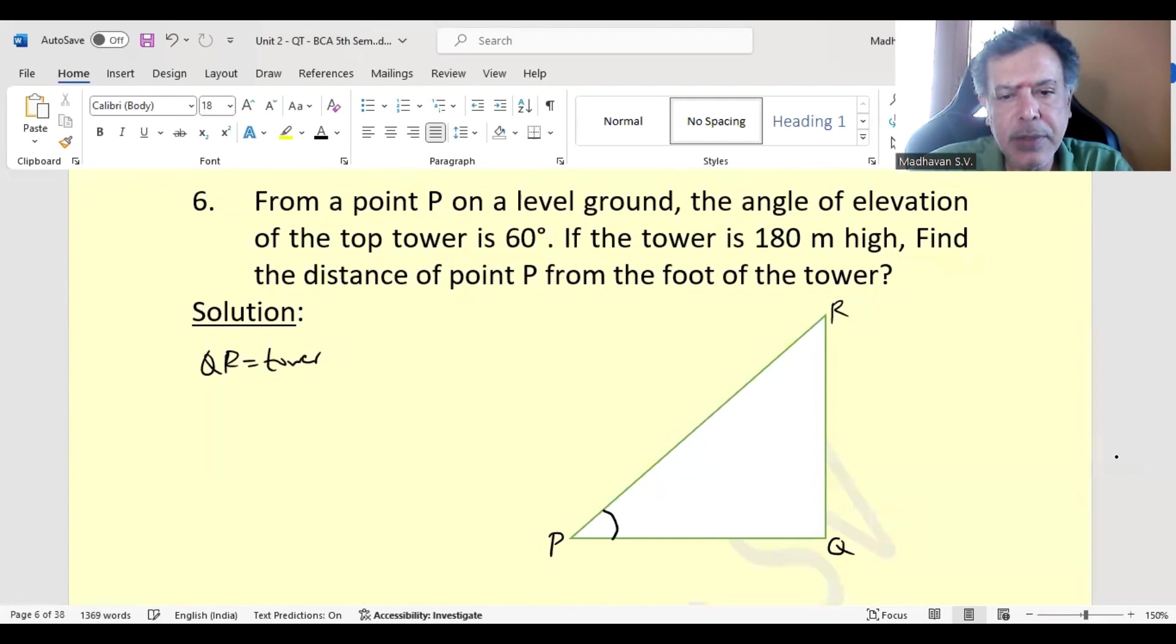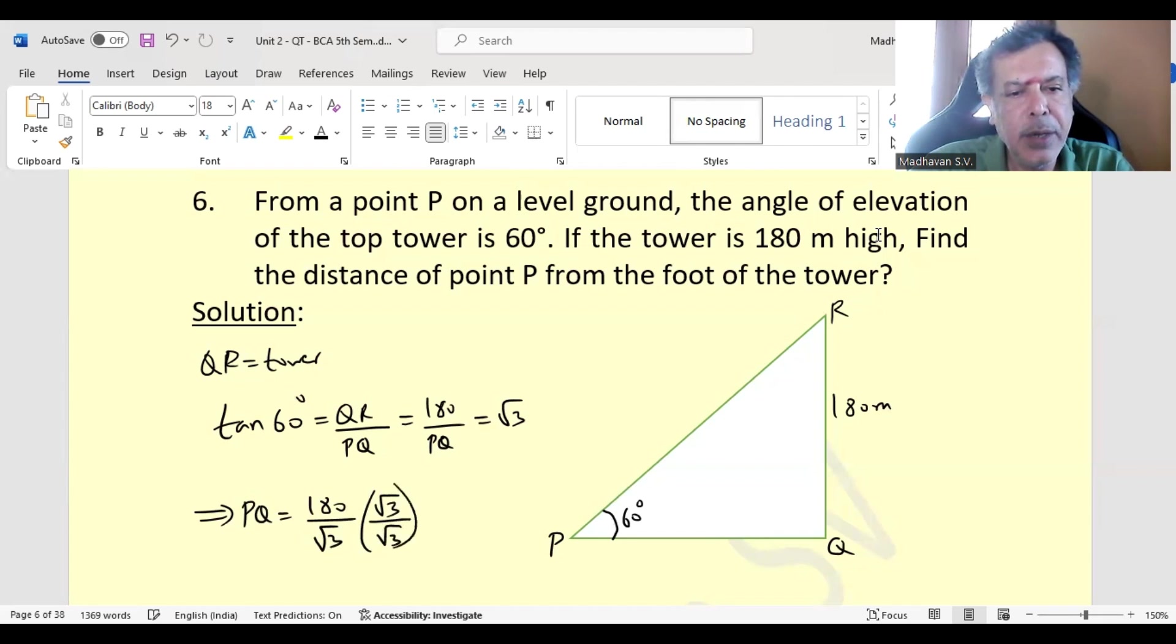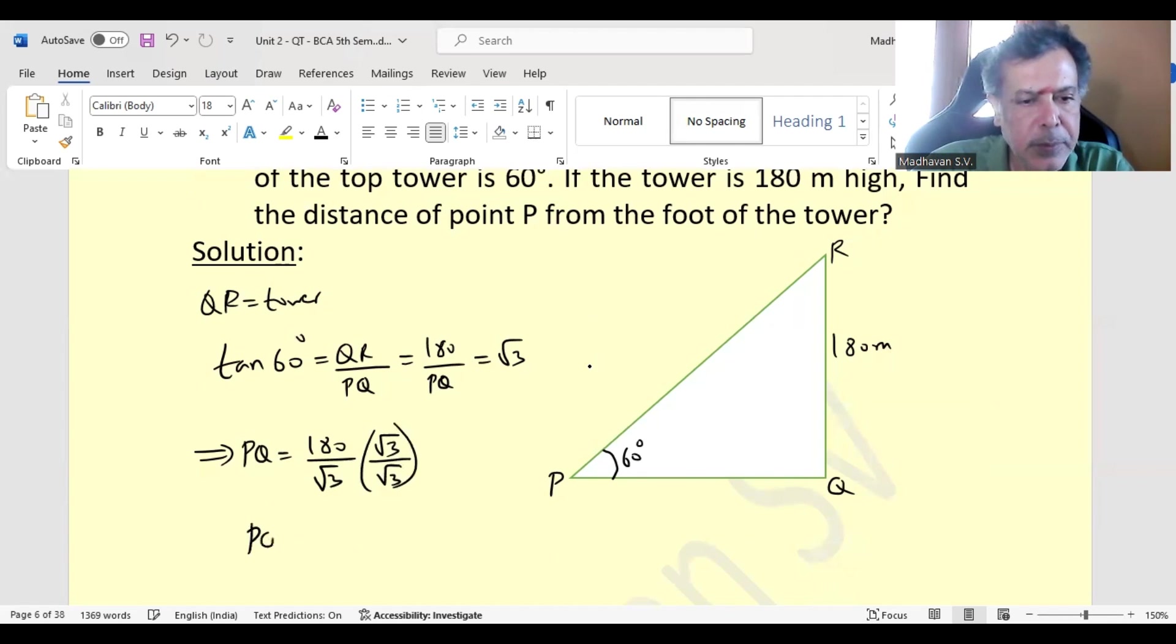The angle of elevation is given as 60 degrees. We have tan 60 degrees equals opposite QR divided by PQ. QR is given as 180 meter. Tan 60 is root 3. That means PQ is 180 by root 3. If we multiply root 3 in denominator and numerator, we get PQ as 180 into root 3 by 3, which will give you 60 root 3 meter. That is the desired distance.